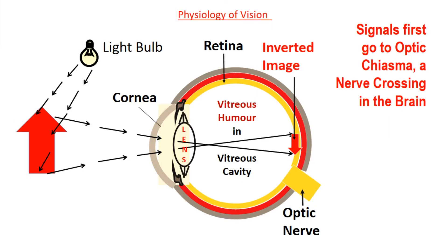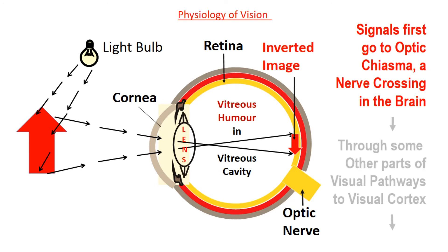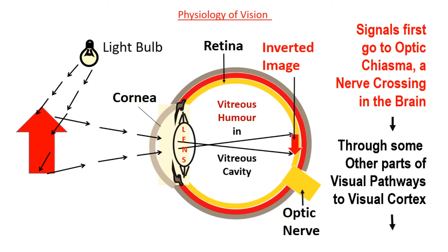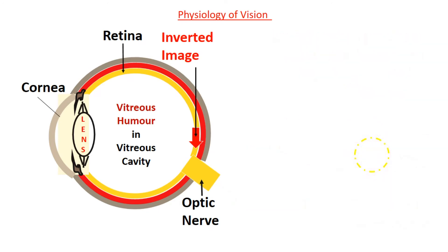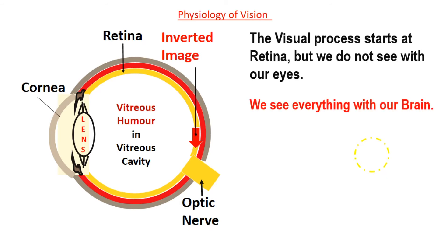Signals first go to the optic chiasma, a nerve crossing in the brain, and then through other parts of the visual pathways such as the optic tract, lateral geniculate body, and optic radiations to the visual cortex. Through various processes inside the brain, the image of an object is now perceived at the visual cortex, which is situated within the occipital area of the brain. Here the object is seen upright. So it may appear unbelievable, but it's quite true that we do not see anything with our eyes — we see everything with our brain.